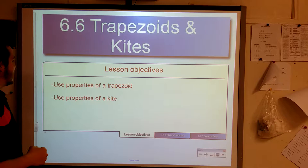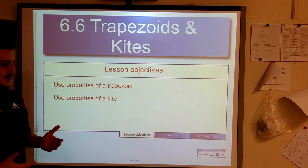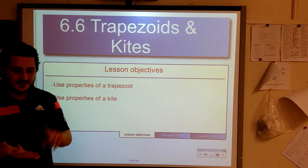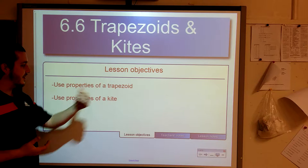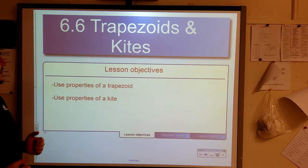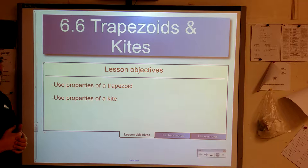All right, 6.6 trapezoids and kites. We're going to use the properties of trapezoids and the properties of kites. You guys asked yesterday when I gave you that sheet, you had your parallelograms, the quadrilateral, the square, the rectangle, the rhombus. You saw the trapezoid and the kite and you're like, what's up with those? I said, don't worry, we're going to get to that. And here it is. So our objectives, we're going to talk about trapezoids and kites. The title is trapezoids and kites. You should have the title page at this point.